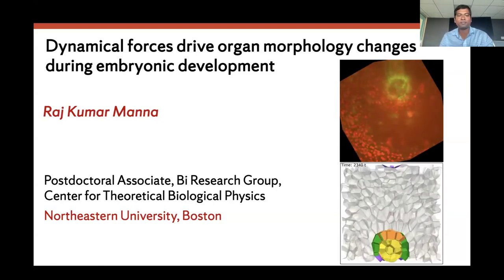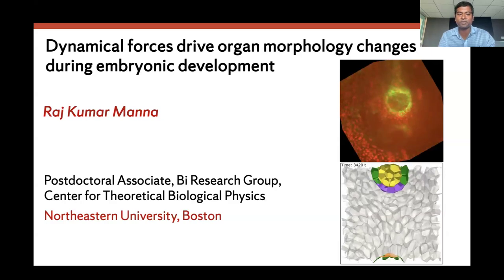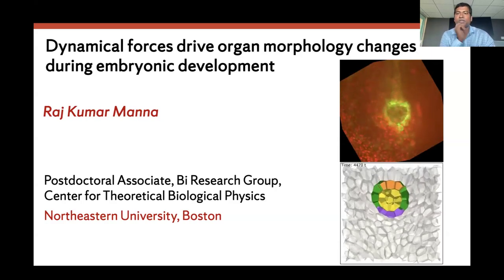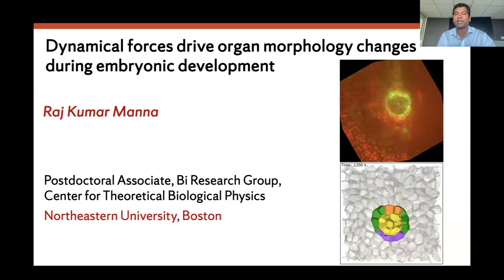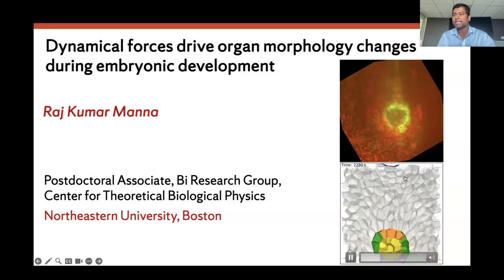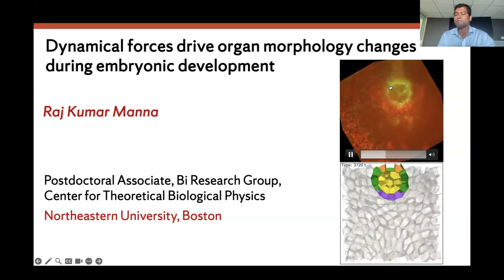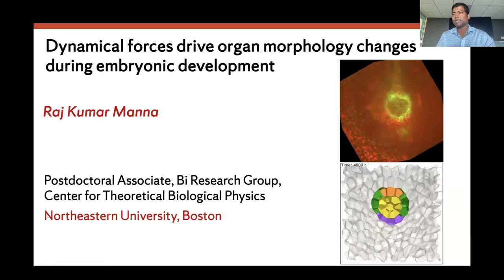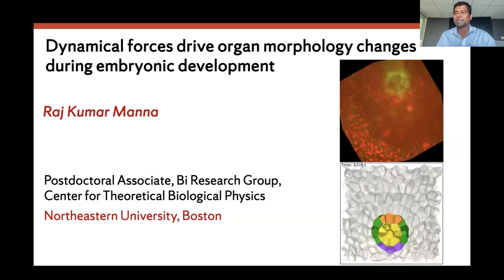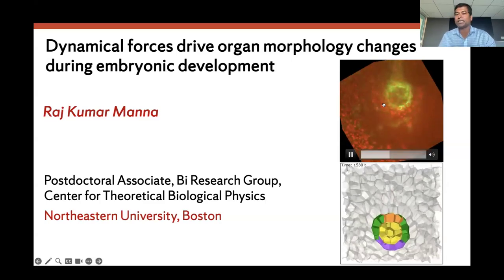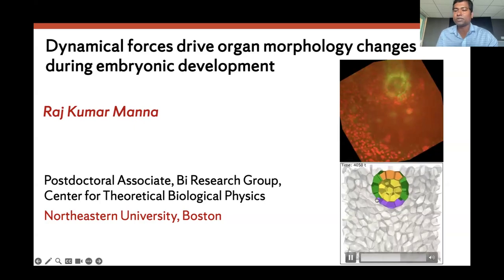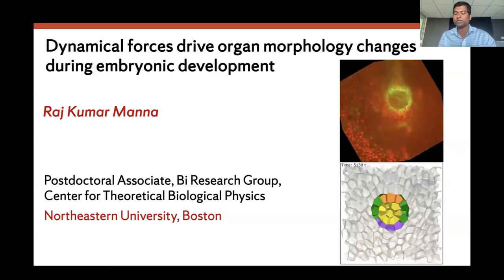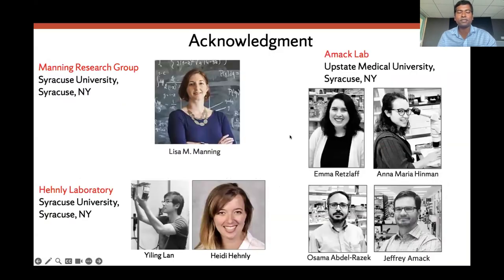Hello, everyone. I'm a postdoc at Max Bees Group in Northeastern University. Today, I'm going to talk about the role of dynamical forces in organ development. Our model organism is Kupffer's vesicle in zebrafish. You can see in the top image it is a spherical monolayer of epithelial cells moving through tailbud cells. I'm going to discuss how different forces contribute to its shape changes, and we use laser ablation experiments and a 3D vertex model to see the contribution of these dynamic forces. Before I start, I would like to thank my co-authors of this work.